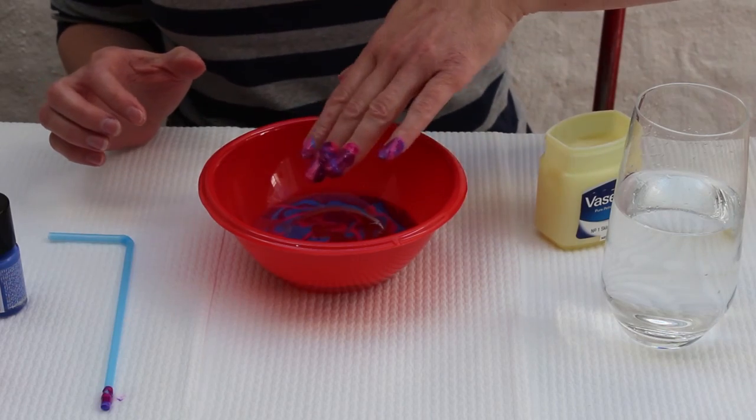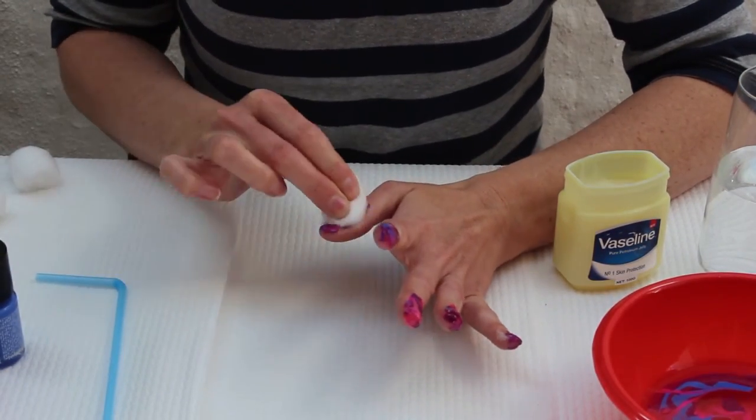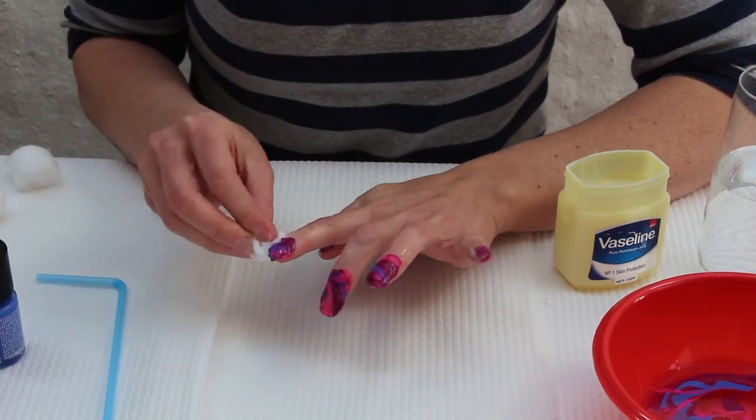Dip your fingers into the bowl flat and let the nail polish set on your nails. Give the nail polish a few minutes to set, then begin to wipe off the Vaseline covered area of your fingers.